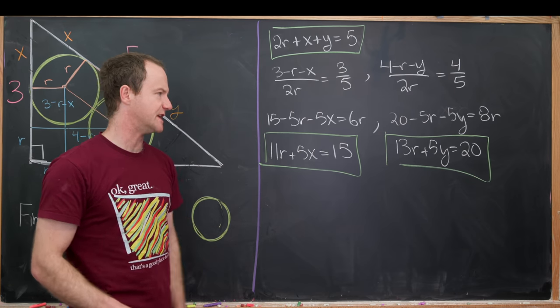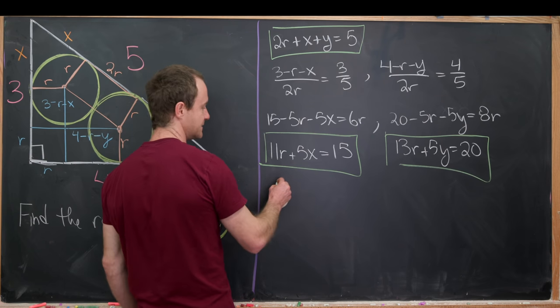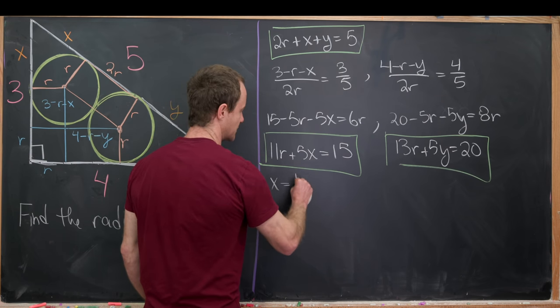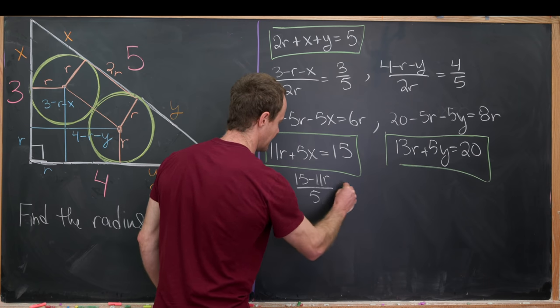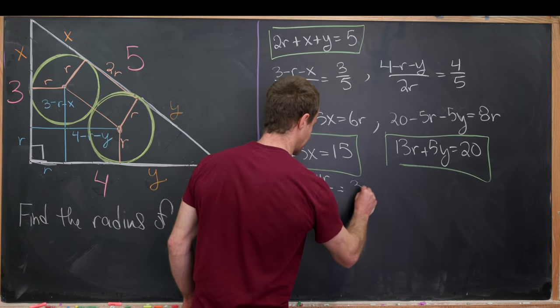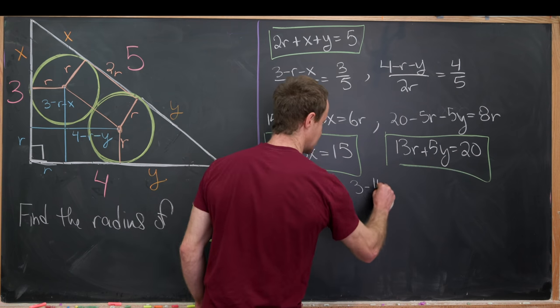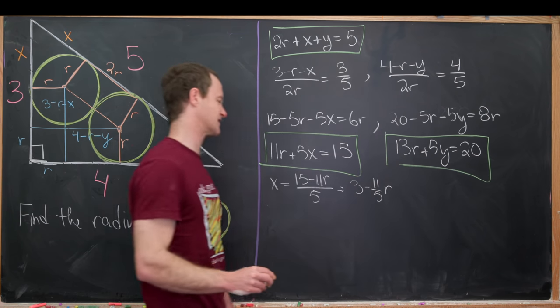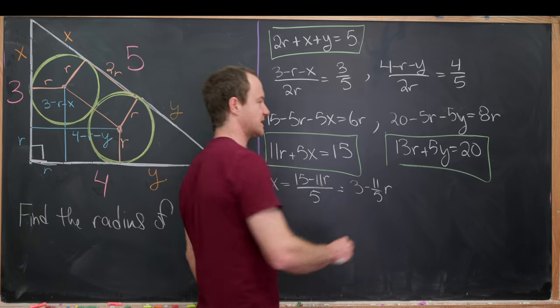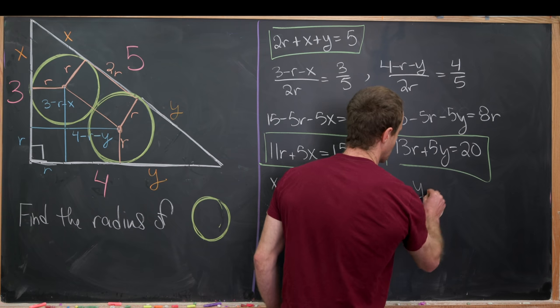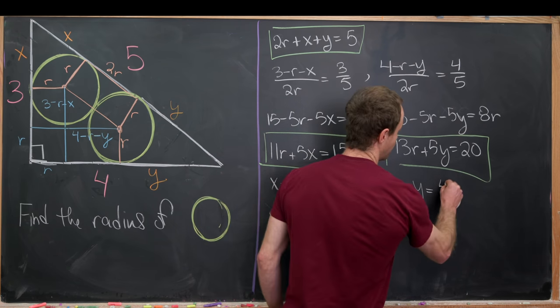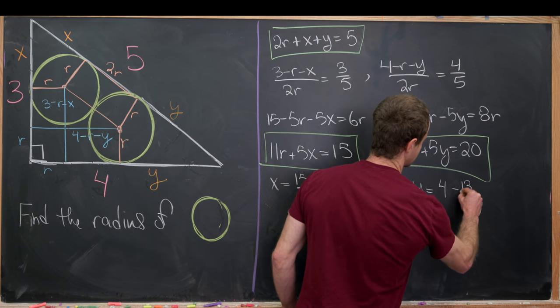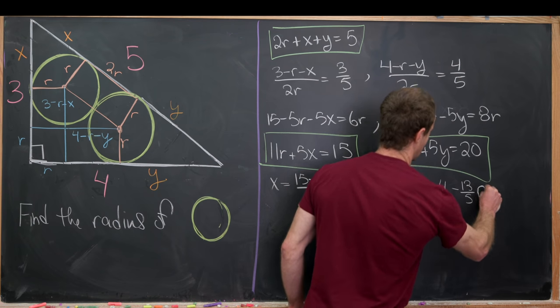So let's solve each of these for x and y respectively. So this one will give us x equals 15 minus 11r over 5. That could also be written as 3 minus 11 over 5r. Maybe that's a little nicer. Then we could do something similar over here. We'll get y is equal to 4 minus 13 over 5r.